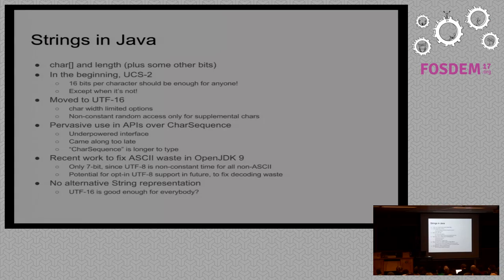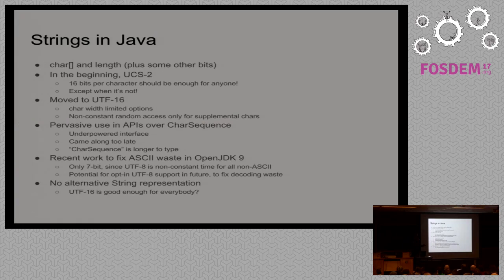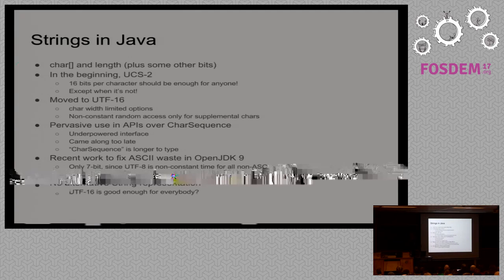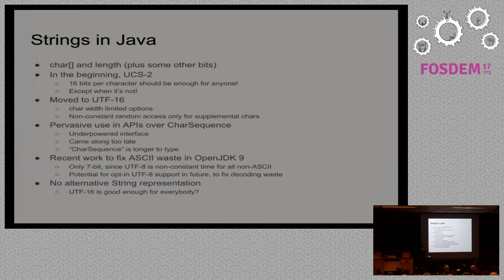There are other bits and bobs in there sometimes to save cached hash codes and such. In the beginning, UCS-2 was fine — 16 bits per character should be enough for all the characters in the world, right? Well, it turns out that's not quite true. Later on, it was moved to UTF-16. We keep the 16-bit characters, but we have to sacrifice constant random access time for certain types of characters in the higher planes, like emojis. Generally, we still have constant access time and it still fits in the typical character size.